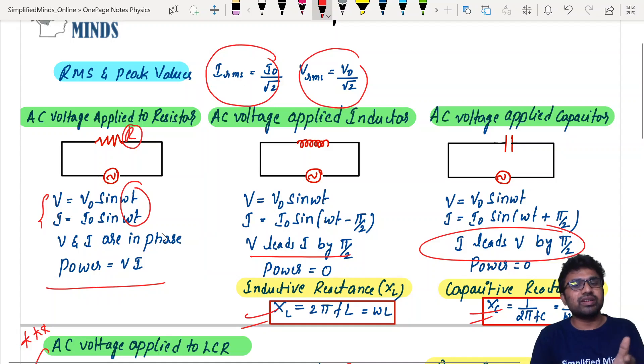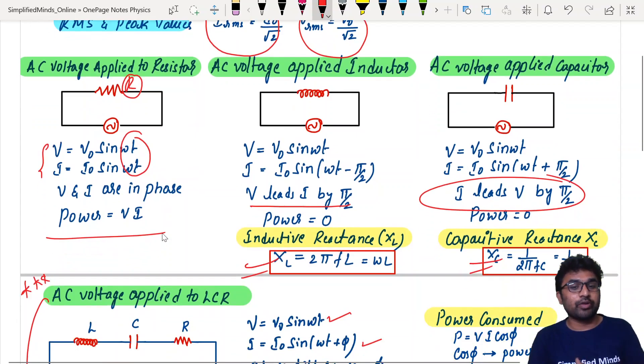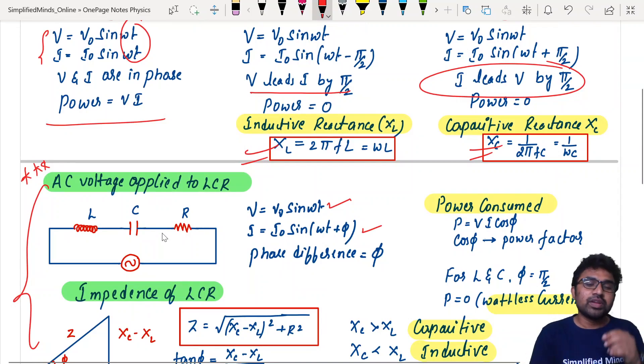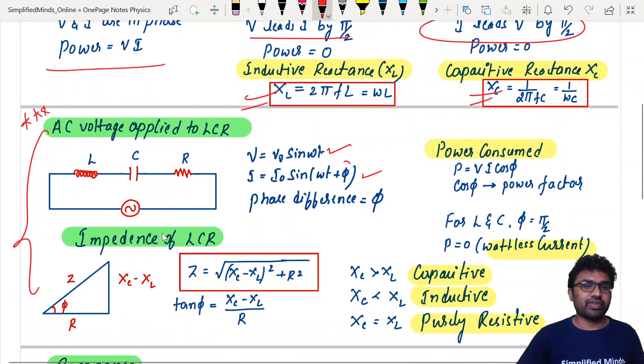See, in case of pure inductor and capacitor, both of the cases it's pi by 2. In one case minus pi by 2, in other case it's plus pi by 2. But now we generally mix the LCR. Let's take the general as phi for the phase difference.